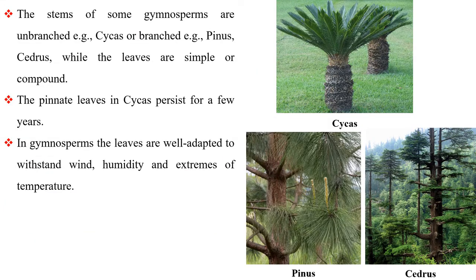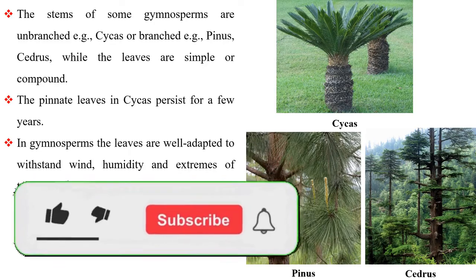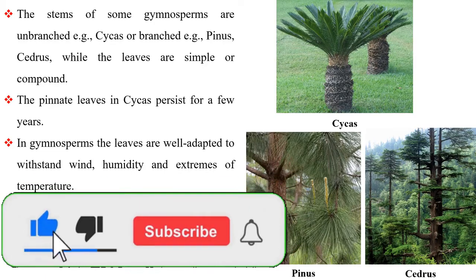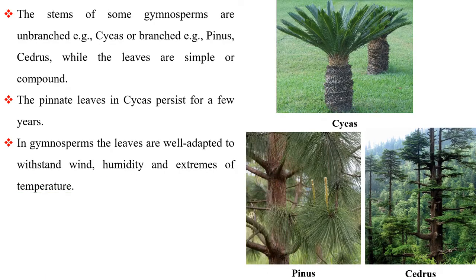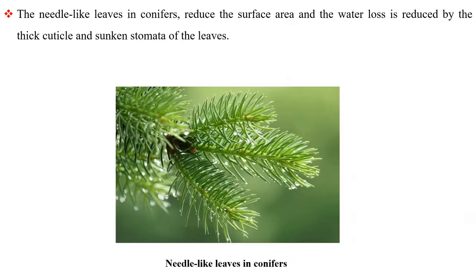The stems of some gymnosperms are unbranched, for example cycas, or branched, for example pinus and cedrus, while the leaves are simple or compound. The pinnate leaves in cycas persist for a few years. In gymnosperms, the leaves are well adapted to withstand wind, humidity and extremes of temperature. The needle-like leaves in conifers reduce the surface area, and water loss is reduced by the thick cuticle and sunken stomata of the leaves.